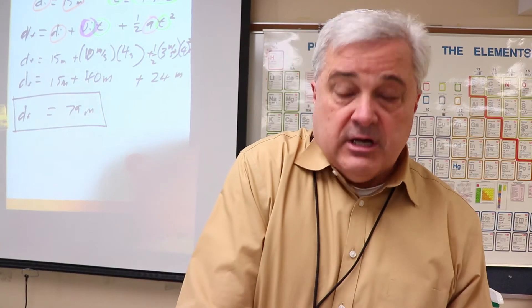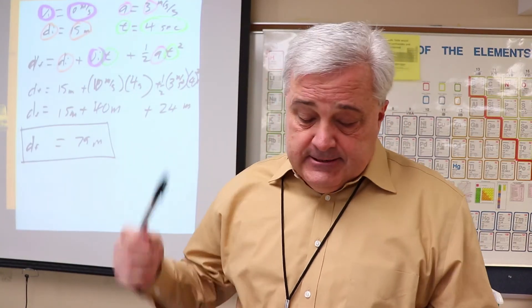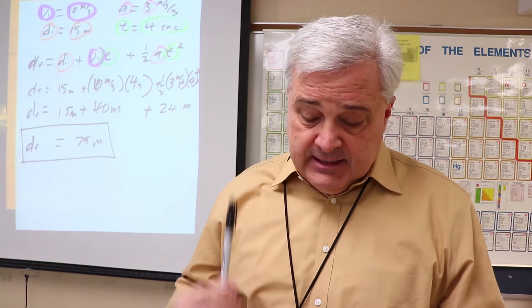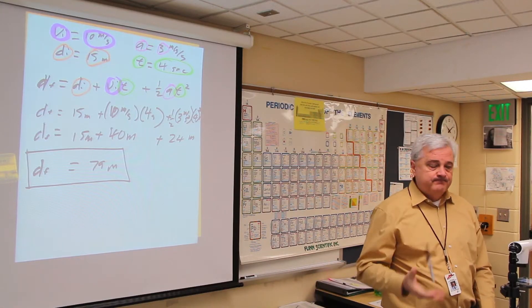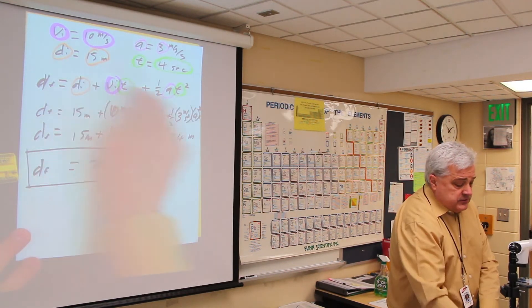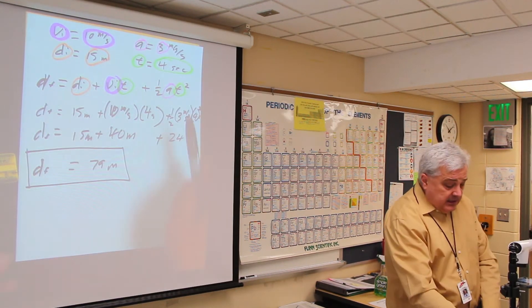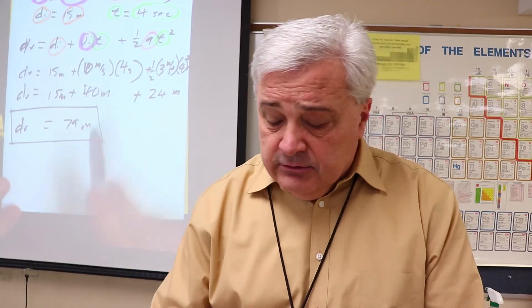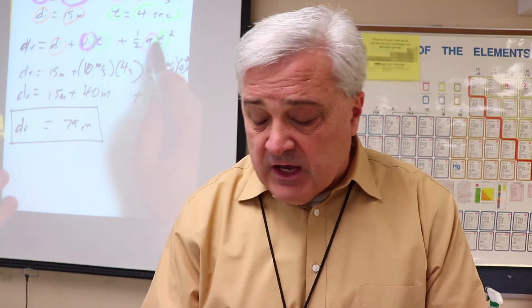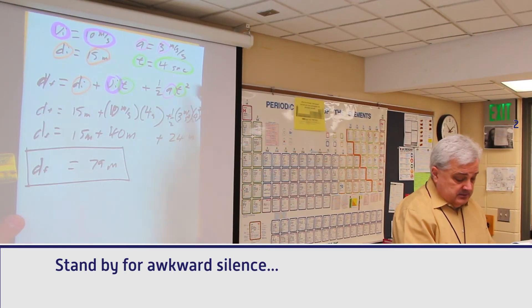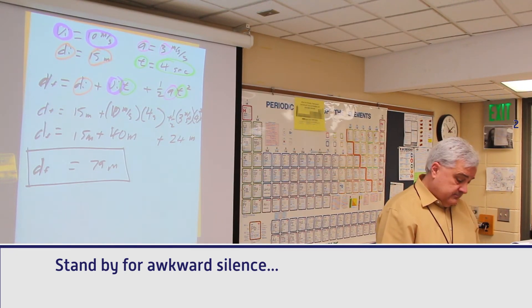Again, write down what's given, write down the relevant formula, plug in and solve. So there you have an example of finding that final distance where all the other stuff is given. Finding any of the other pieces is just a matter of algebra, and I'll do another video later on where we solve for a or we solve for t, which are the most complicated in the algebra side of things.